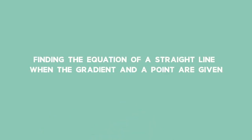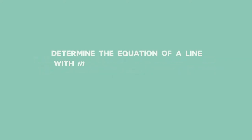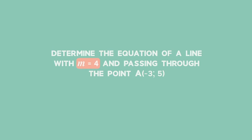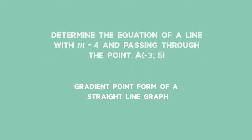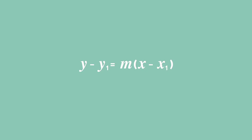Example 1: Finding the equation of a straight line when the gradient and a point are given. Determine the equation of a line with a gradient equal to 4 and passing through the point A at coordinates (negative 3, 5). Since we have the gradient and a point, we use the gradient-point form: y minus y1 equals m multiplied by the difference of x and x1.